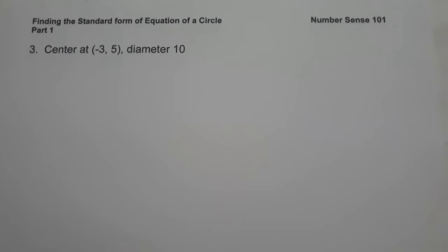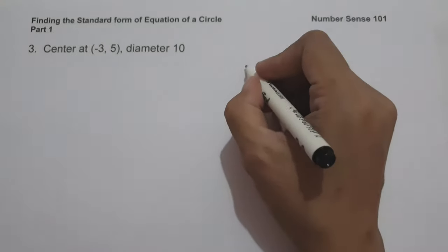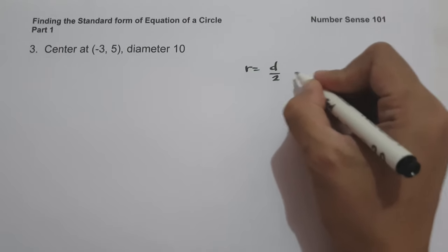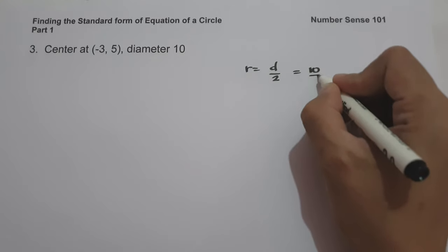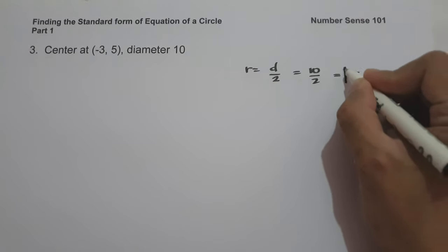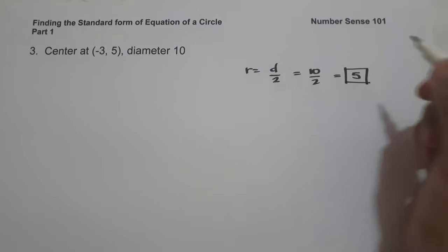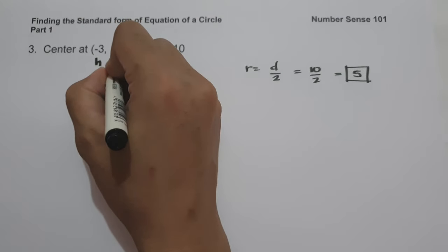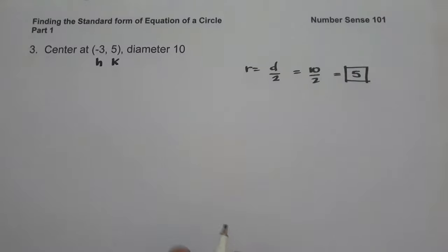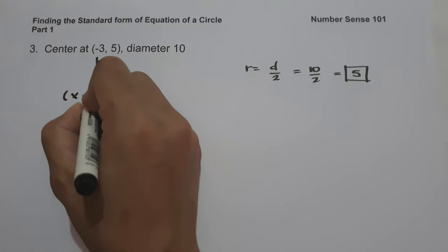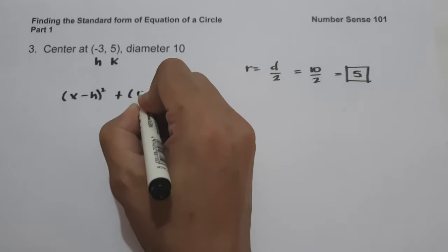On example number three, we have center at (negative 3, 5) and diameter is 10. The first thing we need to do is identify the value of the radius. Since the radius is half of the diameter, we divide 10 by 2, which gives us 5. So the radius is 5, h is negative 3, and k is 5.